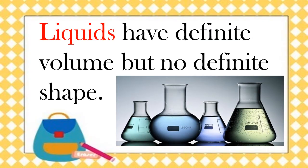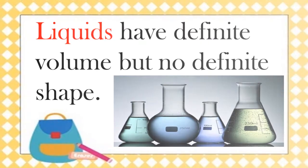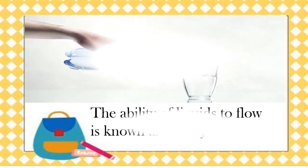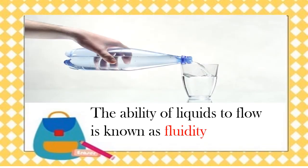Like solids, liquids have properties too. Liquids have definite volume but no definite shape. They take the shape of their containers. Liquids have the ability to flow. Water flows as you pour it from one container to another. The ability of liquids to flow is known as fluidity.